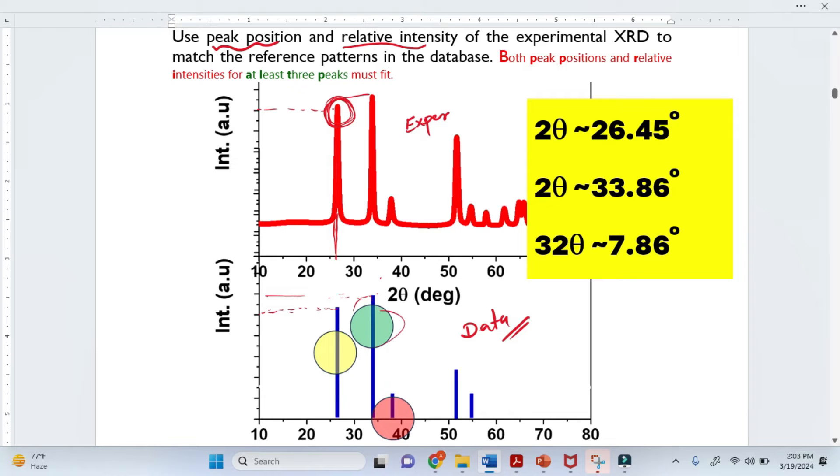Why I circle these three? At least three peaks should match exactly with the database. You see here, both peak position and relative intensity for at least three peaks must fit. So once it is 100% match and fit, you can clearly identify that this is this kind of phase.